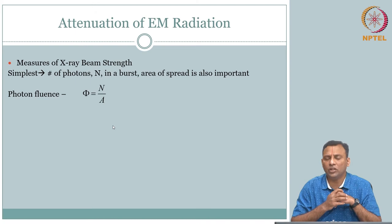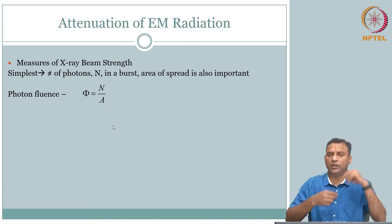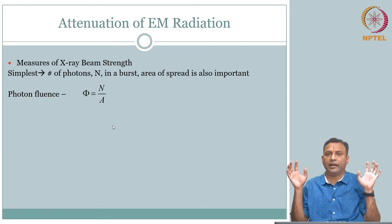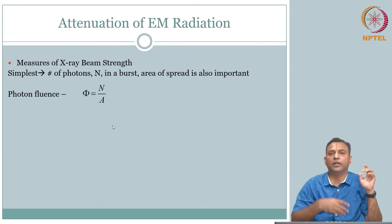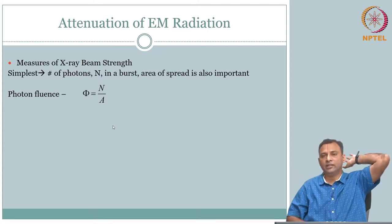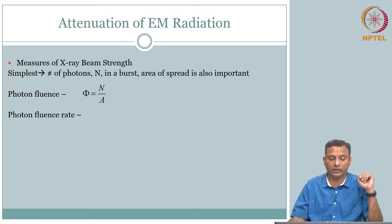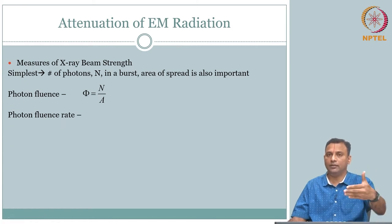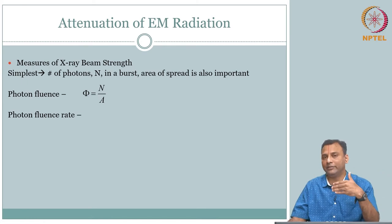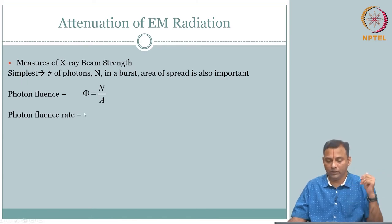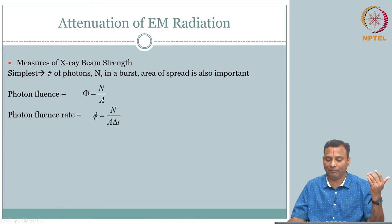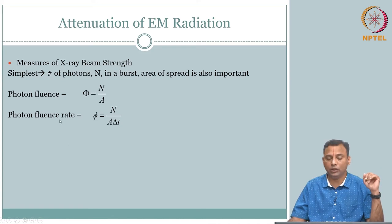But we should also be interested in the rate at which photons are arriving — if I send some photons and they come out, I have to detect them and I cannot wait indefinitely. So in some sense, photons per cross-section is good, but the rate at which they are coming is also important. That is photon fluence rate — it is a temporal quantity, normalizing with time. This is the fluence per unit time: n over A per delta-t is the fluence rate.